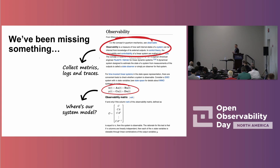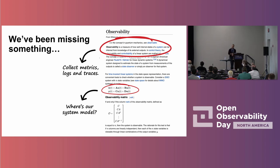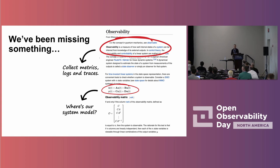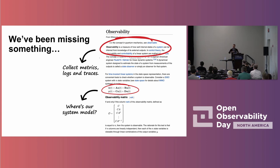I think this is because we've been missing something when we've been talking about observability. To explain this, I'm going to bring up probably the Wikipedia page that everyone here has read — the Wikipedia page on observability, where the inspiration for observability came from the control systems domain. Right at the top is the definition we're all very familiar with: observability is a measure of how well internal states of a system can be inferred from knowledge of its external outputs. That's the bit we've taken from this Wikipedia page, and we've put it on every single blog about what observability is.